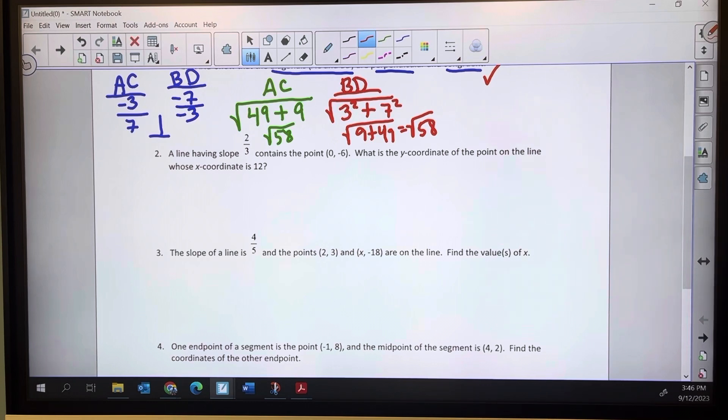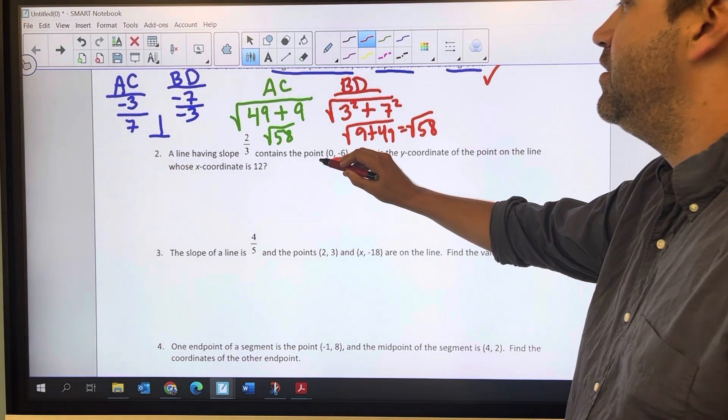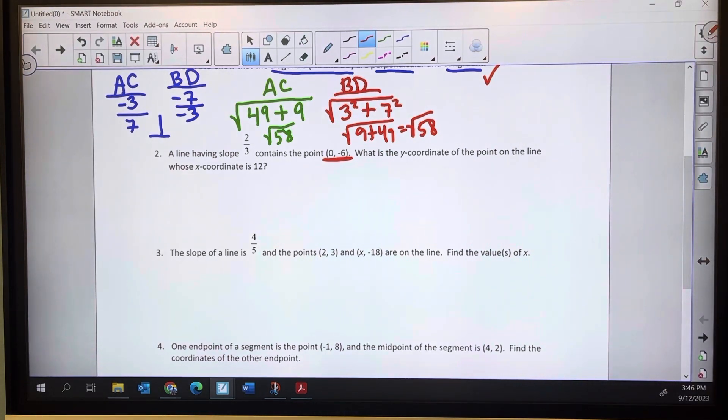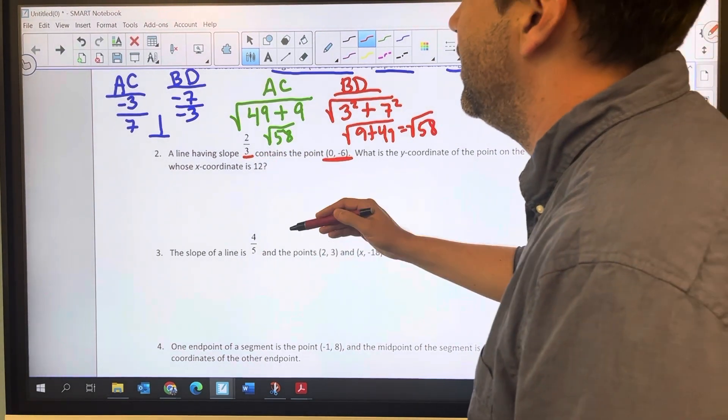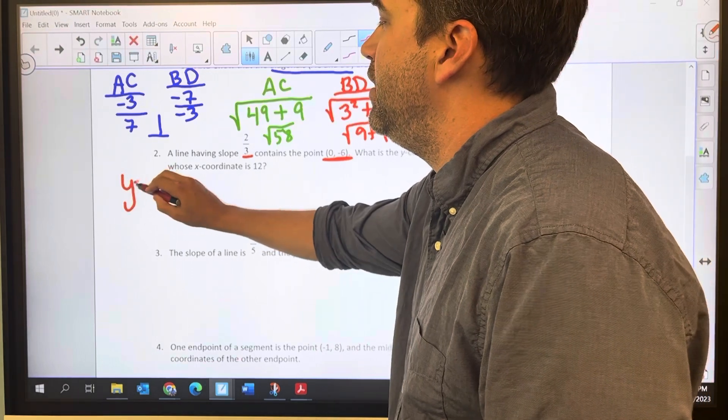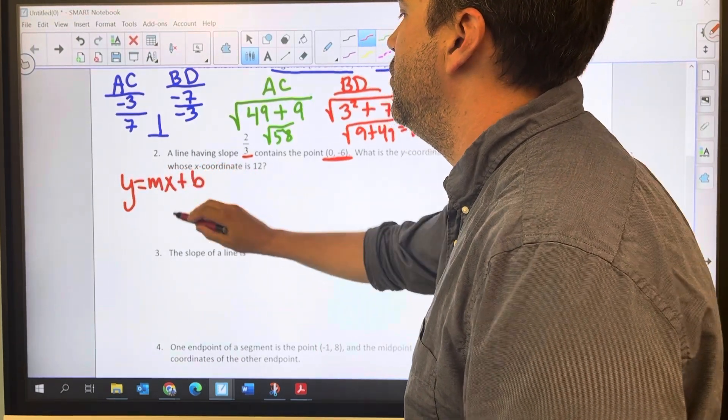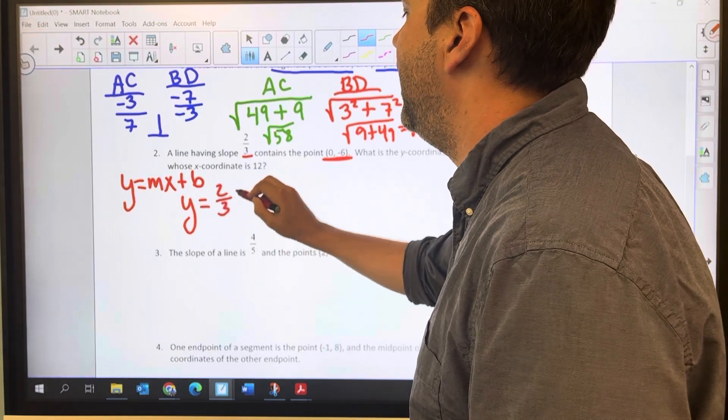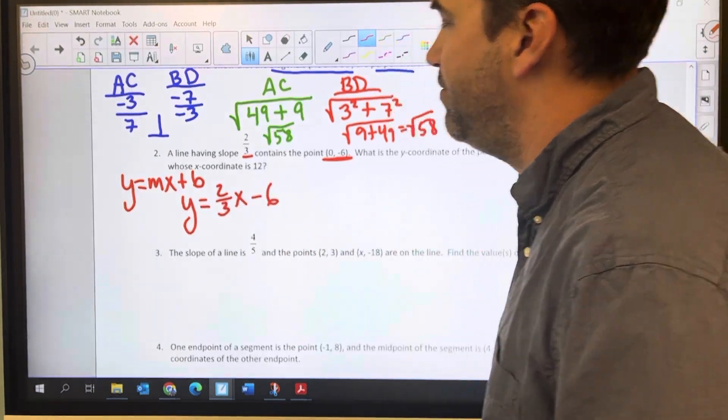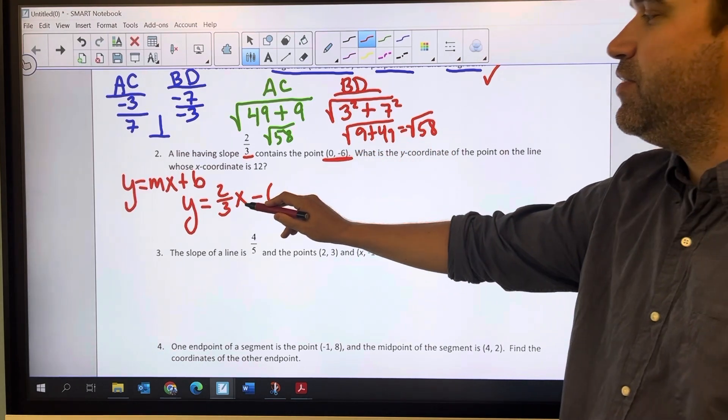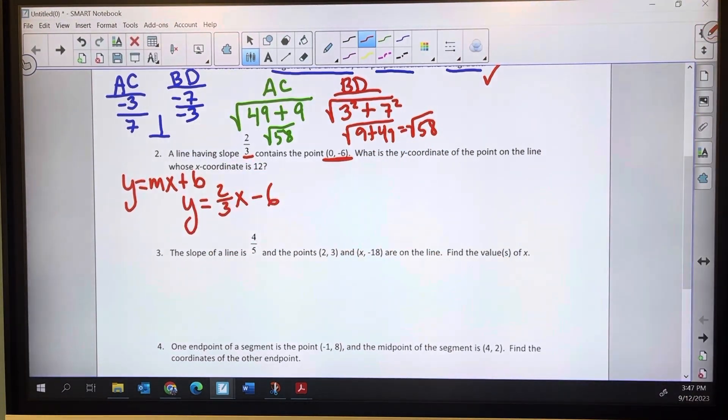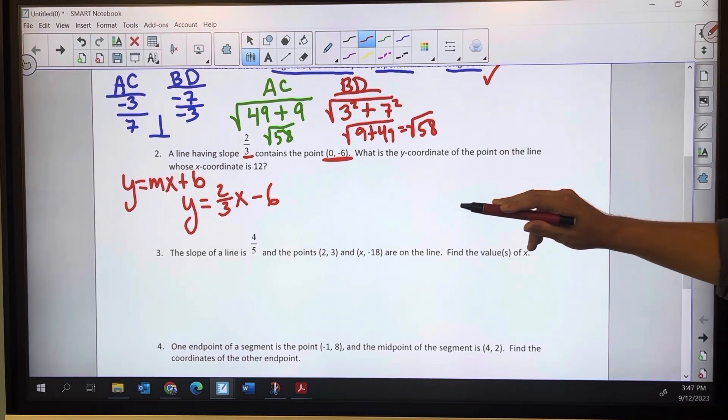Number 2. A line having a slope contains a point. So slope and point. The nice part is that point right there is my y-intercept. So I know what B is. The slope is right there. So I can skip straight ahead from y equals mx plus b to y equals 2 thirds x minus 6. If you need to substitute in, 0 goes for x, negative 6 goes for y, and the math would lead us to b equals negative 6.